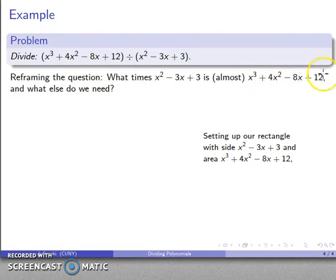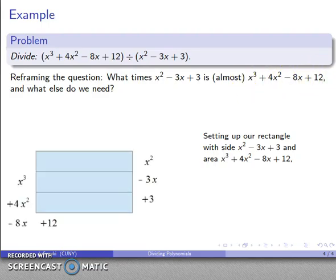I've set up my rectangle and partitioned the factor so that now I have three rectangles, each with side x² - 3x + 3. The area of the whole thing I find by adding along diagonals. I'm going to write along the outer edge here and we'll go through our process.